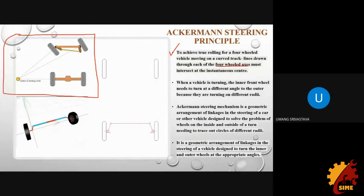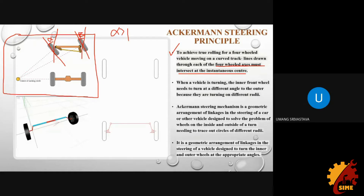Ackerman geometry states that when a vehicle is turning, the inner front wheel needs to turn at a different angle to the outer wheel because they trace different radii. As you can see here, this angle — let's call it alpha — and this angle — beta — are clearly different, with alpha being greater than beta. This is the Ackerman geometry: the angles made by the front wheels differ so the inner wheel doesn't scrub and the outer wheel covers a larger diameter.